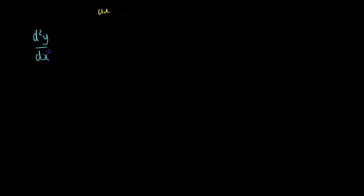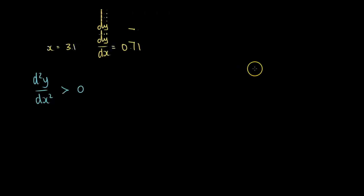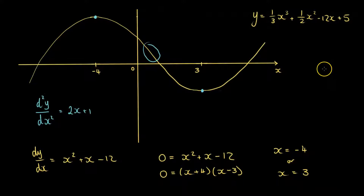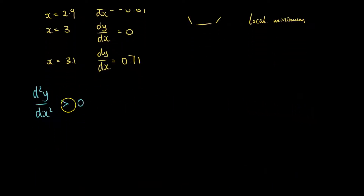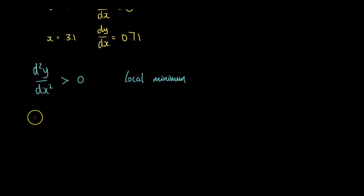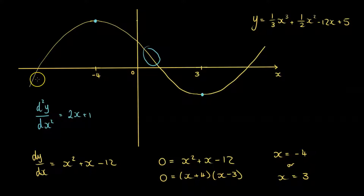So: when d²y/dx² is greater than 0 — meaning the gradient is getting bigger and bigger, starting from a negative number and gradually becoming more positive — this corresponds to a local minimum. And the opposite: if d²y/dx² is less than 0, so the gradient is getting smaller and smaller, then that point corresponds to a local maximum.